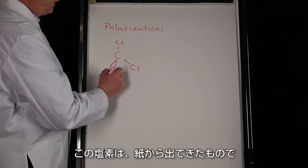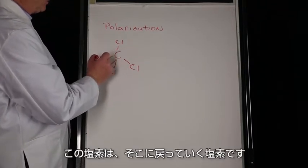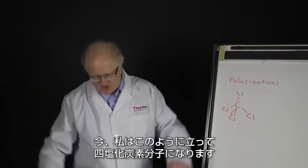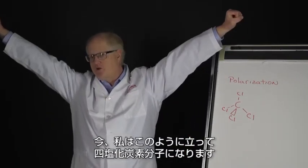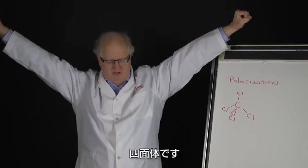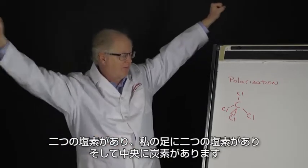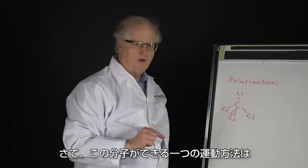So that chlorine is coming out of the paper, this one's going back into it. You have the four chlorines. If I stand like this, I'm kind of a carbon tetrachloride molecule. I'm a tetrahedron—two chlorines, two chlorines for my feet, and the carbon in the middle.